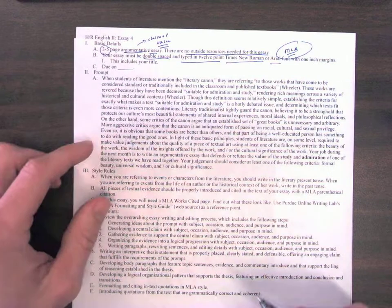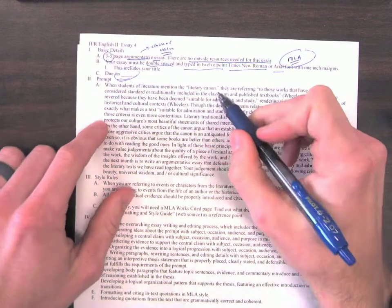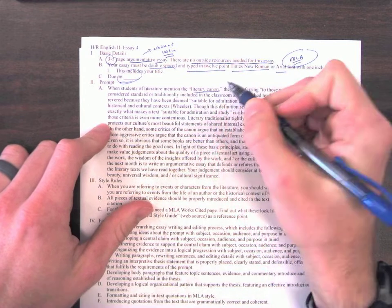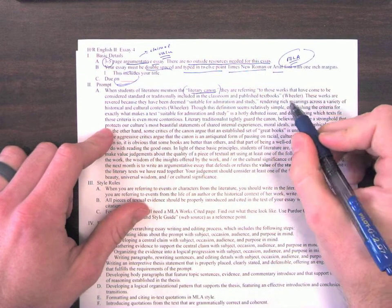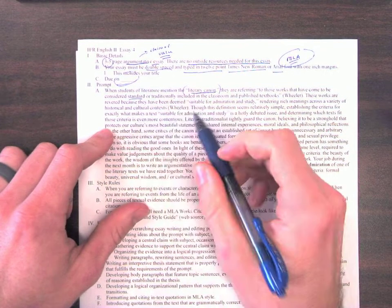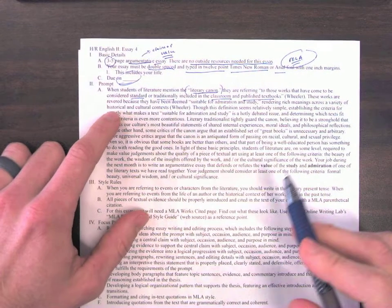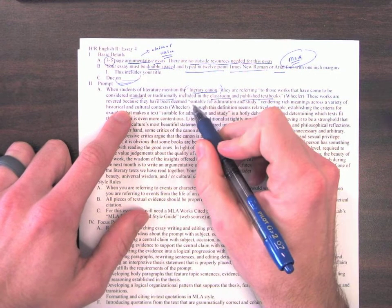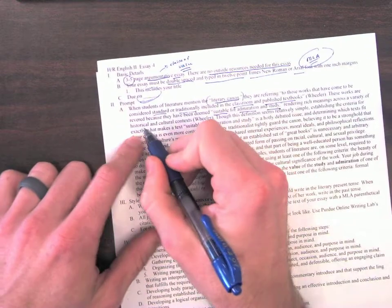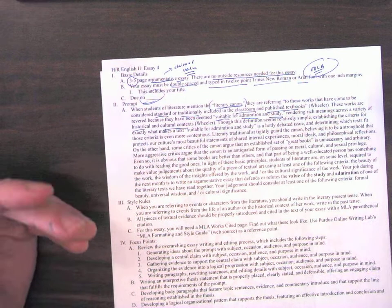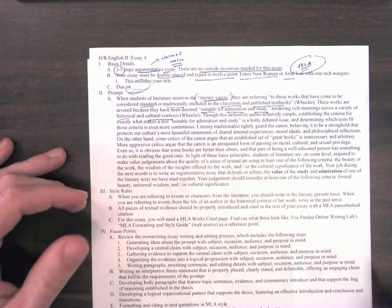So let's read this prompt carefully together. When is it due, first of all? Middle of May. So let's look at the prompt. When students of literature mention the, quote, literary canon, I don't know if you guys have ever heard me say that word before, but the literary canon is just a group of books that are those works that have come to be considered standard or traditionally included in the classroom and published in textbooks. These works are revered because they have been deemed, quote, suitable for admiration and study, rendering rich meanings across a variety of historical and cultural context.